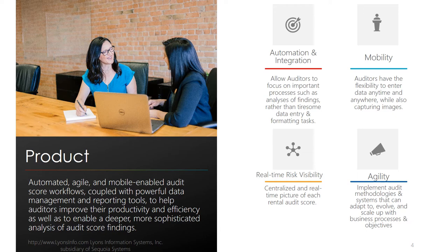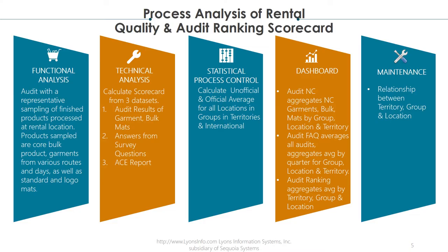Implement audit methodologies and systems that can adapt, evolve, and scale up with business processes and objectives. Process analysis of rental quality and audit ranking scorecard: functional analysis — audit with a representative sampling of finished products processed at the rental location. Products sampled are core bulk product and garments from various routes and days, as well as standard and logo mats.